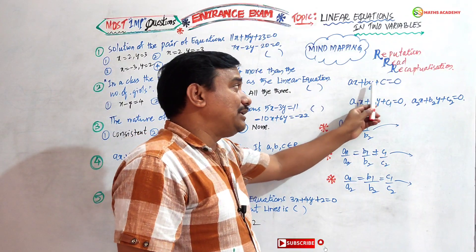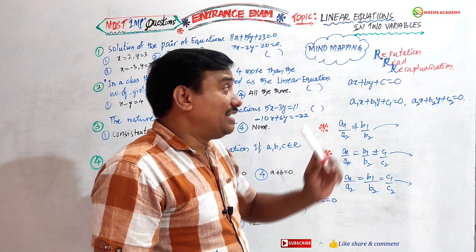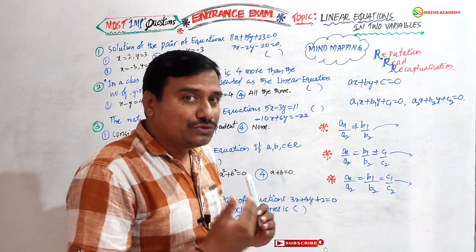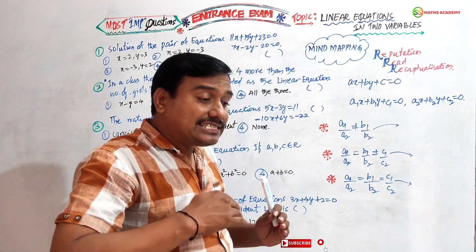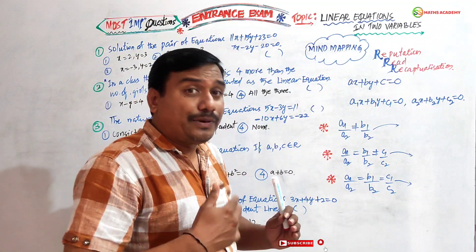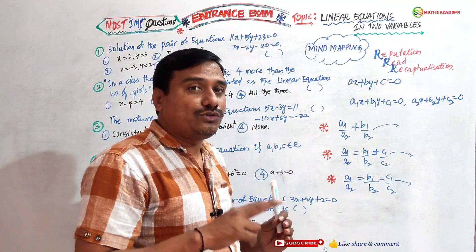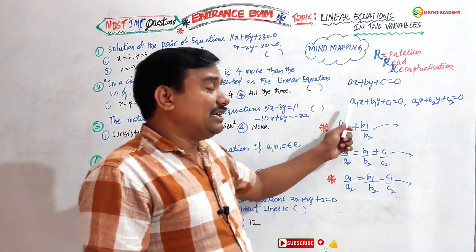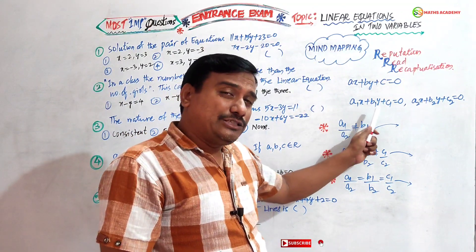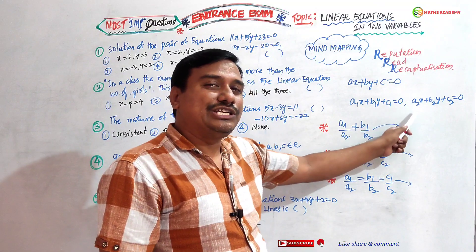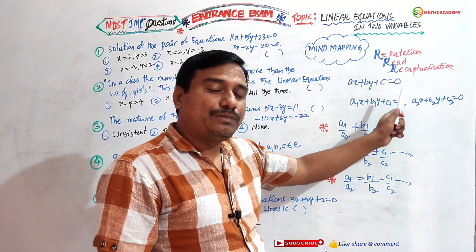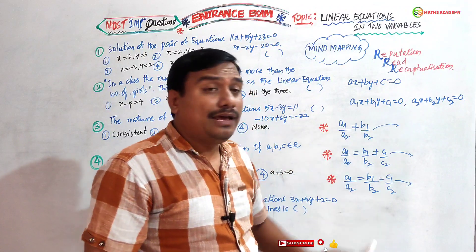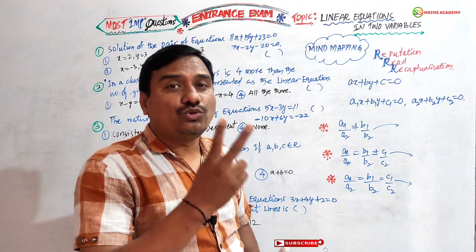Here a, b, c belong to real numbers, and x and y are two variables. In this chapter we are going to discuss simultaneously a pair of linear equations in two variables. The general form is: a₁x + b₁y + c₁ = 0 and a₂x + b₂y + c₂ = 0. These two are called a pair of linear equations in two variables.